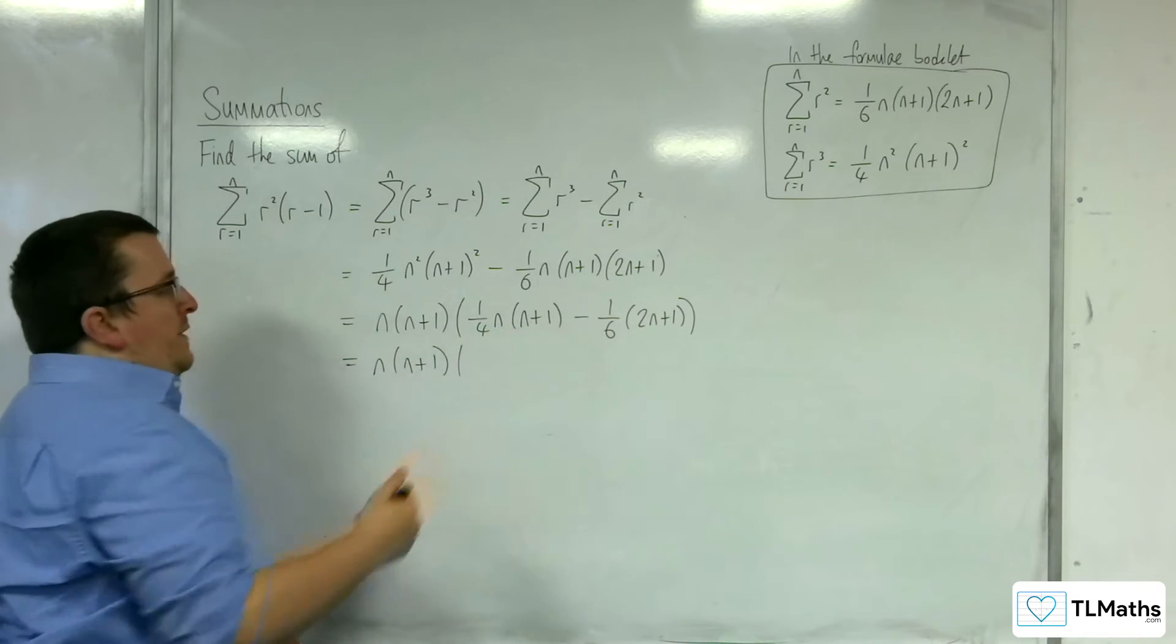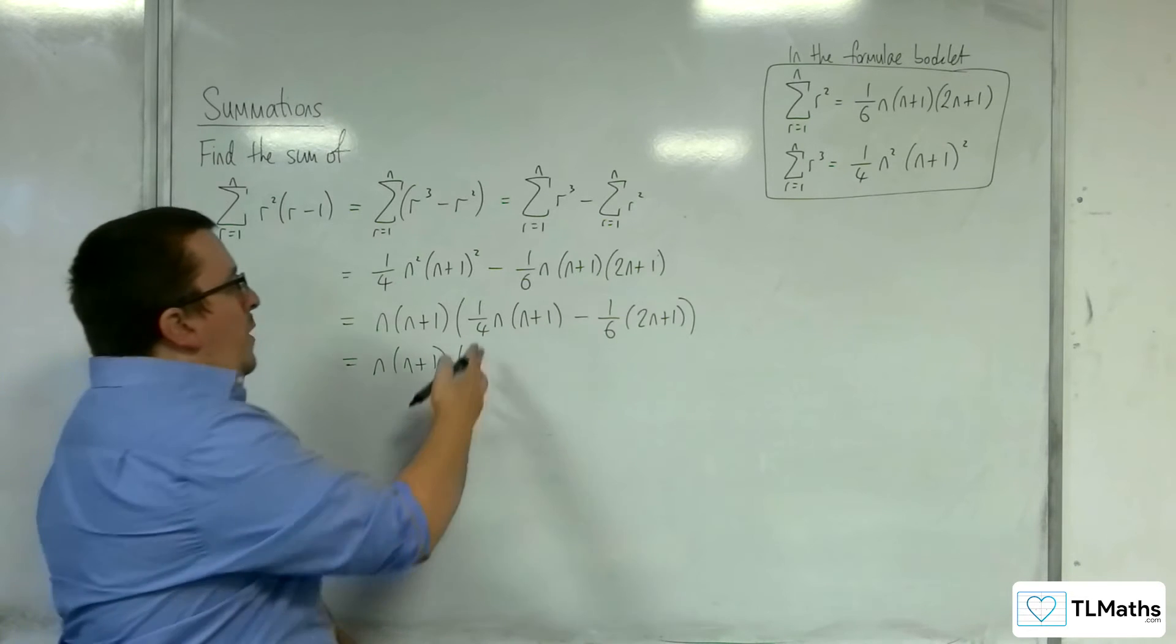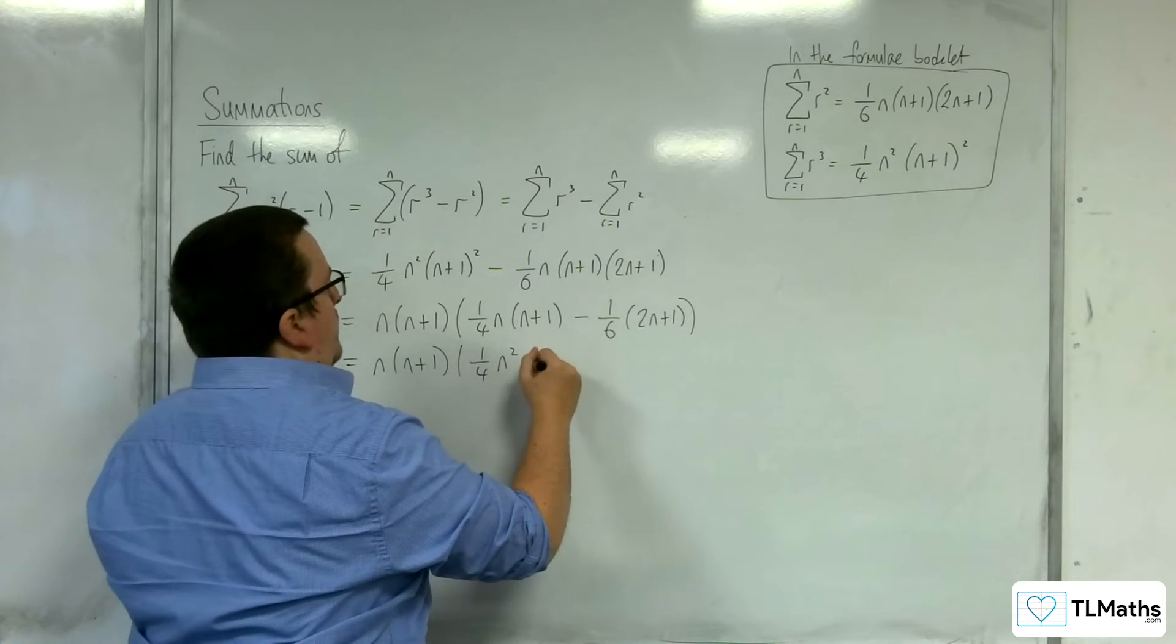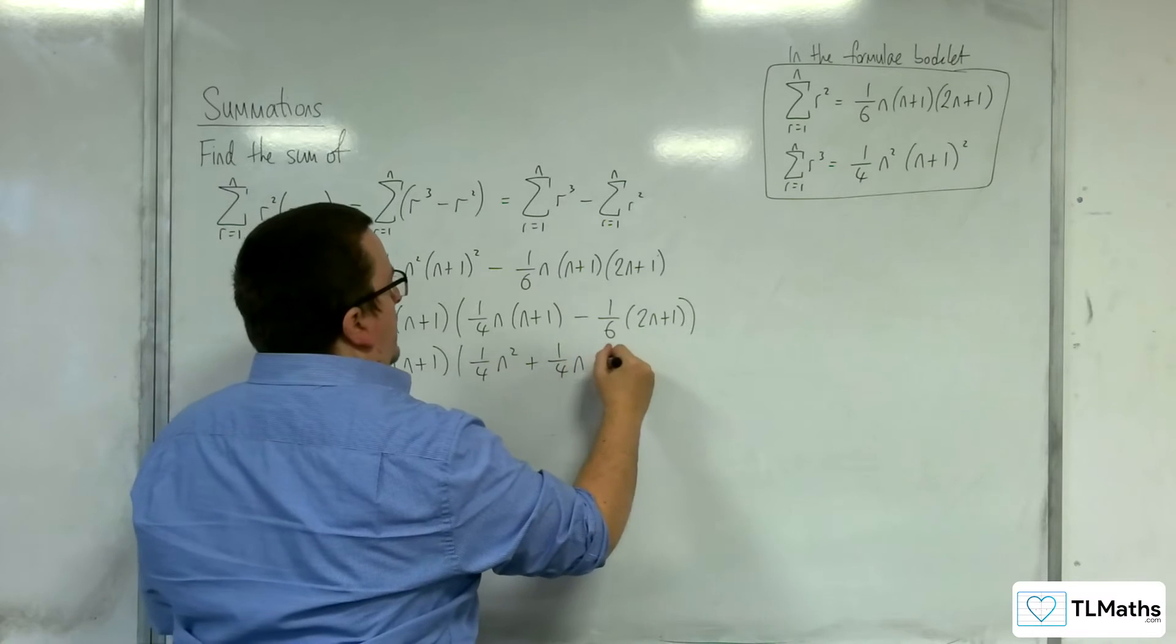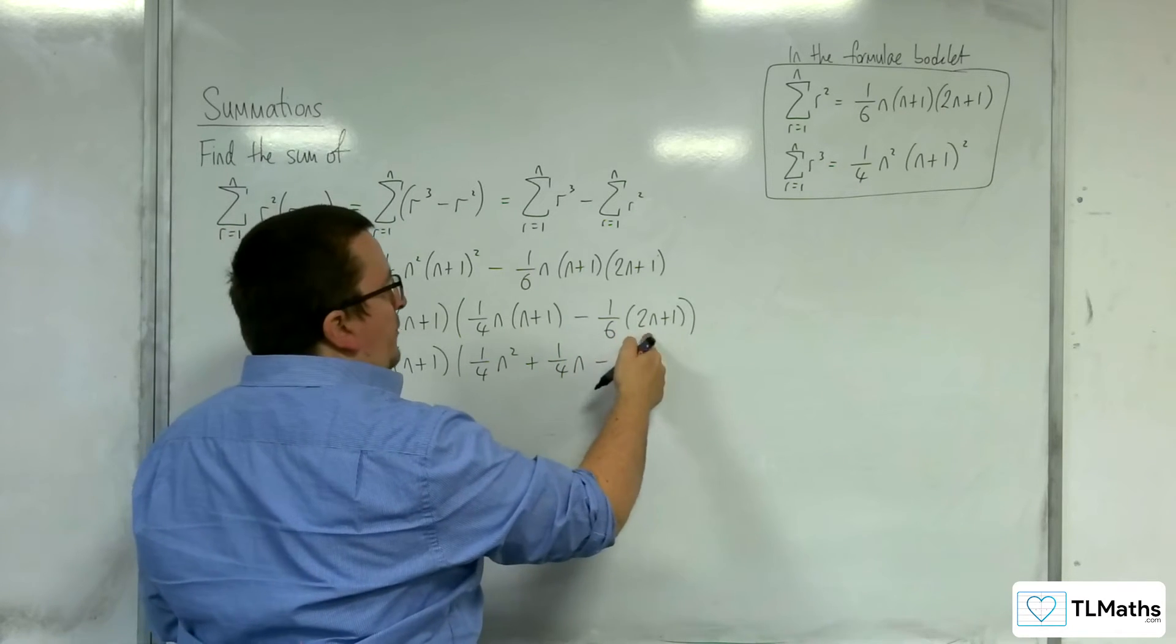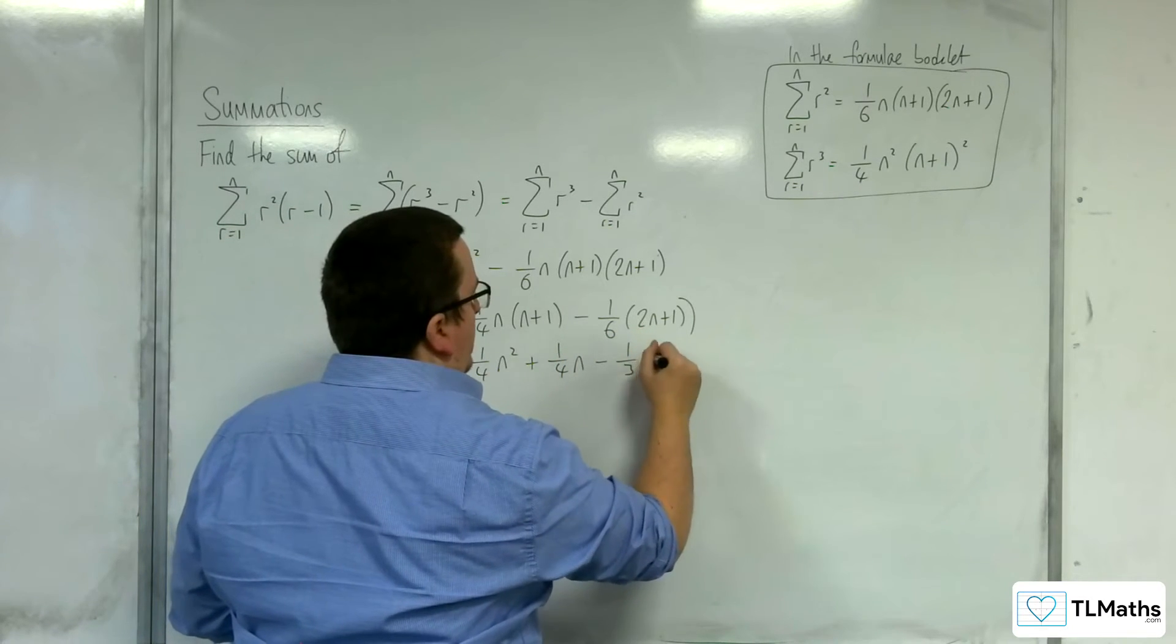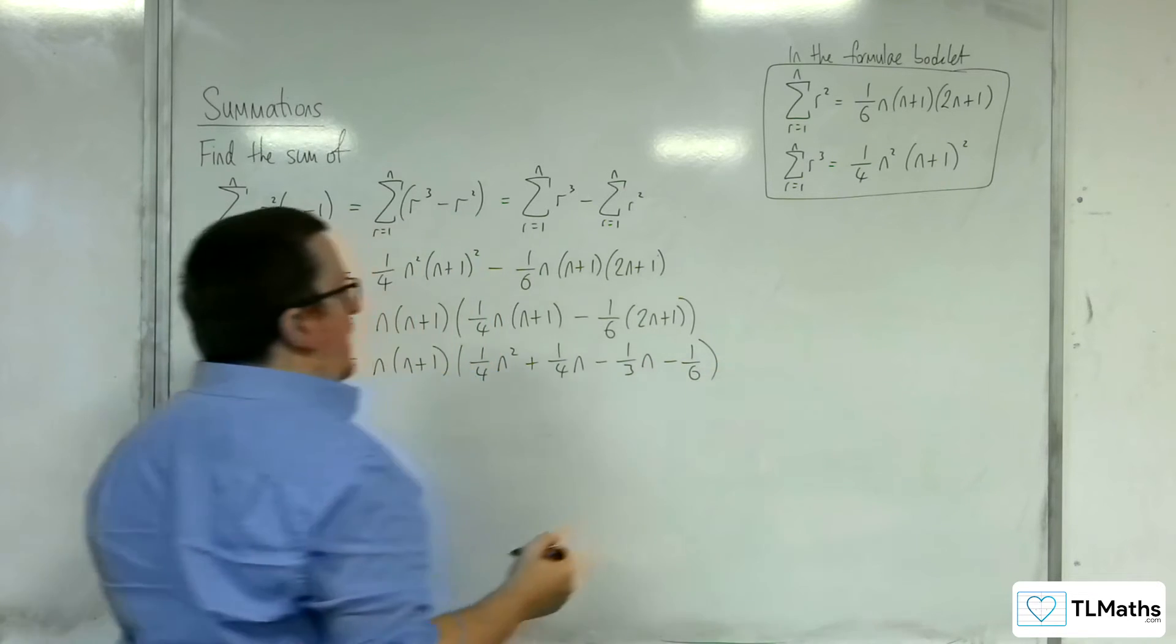So, we're going to have to multiply this out and simplify. We've got 1 quarter n squared plus 1 quarter n. Take away 1 sixth times 2n, so take away 1 third n. And then we're going to have to take away 1 sixth from the end.